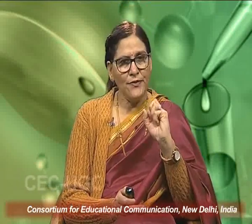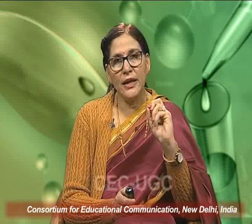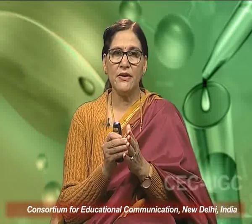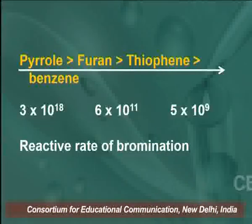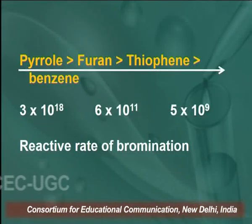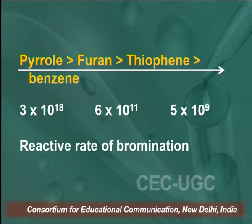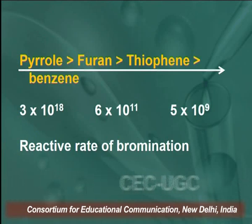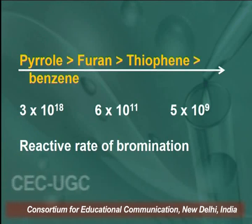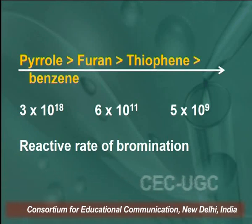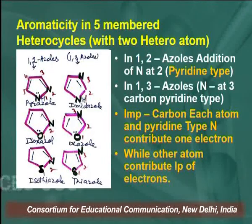Now we talk about the electrophilic substitution reaction, especially bromination. We can compare the rate of bromination in pyrrole, furan, thiophene, and benzene for these three heterocyclic aromatic compounds. This is again a very important topic.